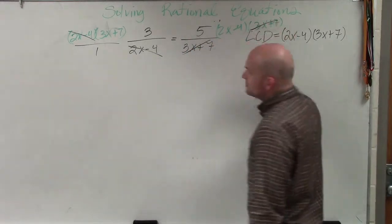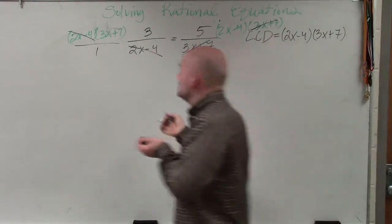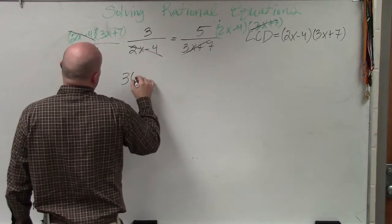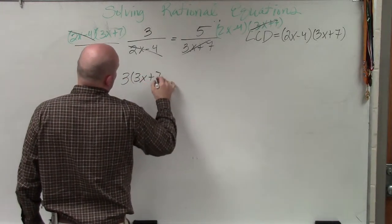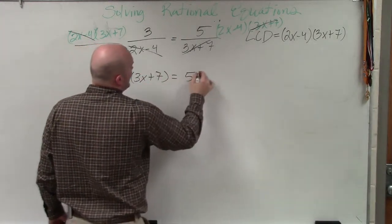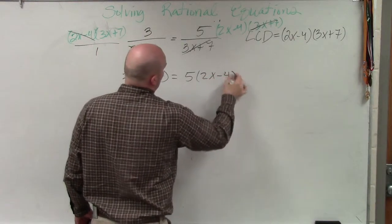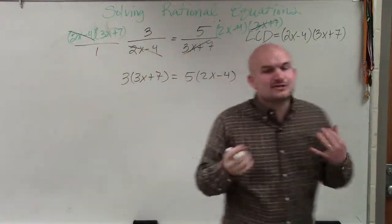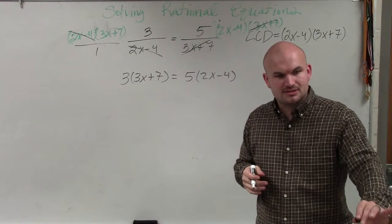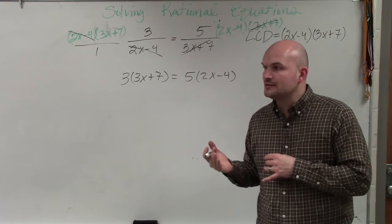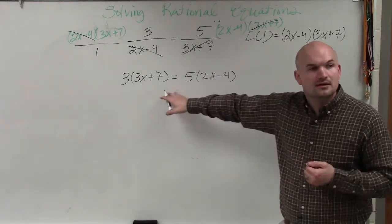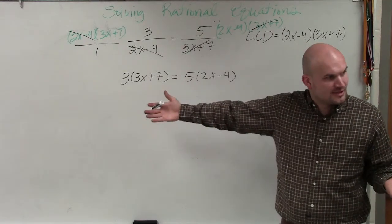Now, we're left with 3 times 3x plus 7 is equal to 5 times 2x minus 4. Now, ladies and gentlemen, we have an equation. Now we have an equation that we can solve using the method that we know.